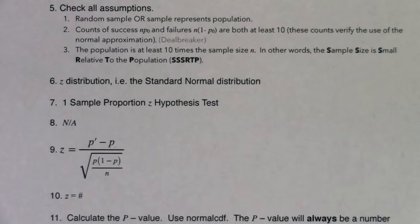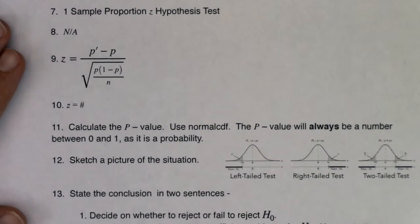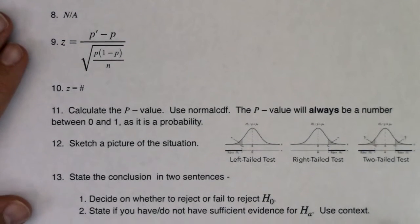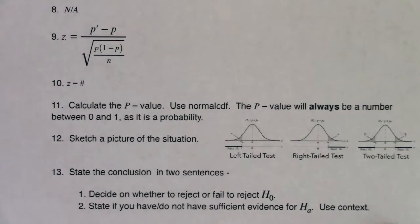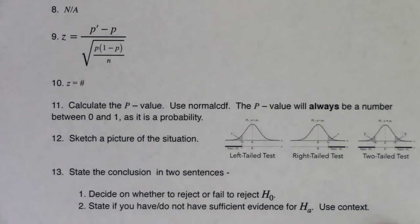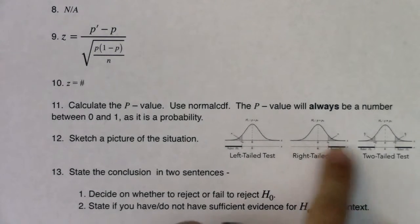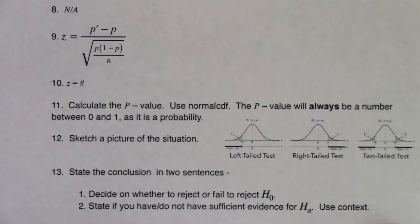In step 10, you'll be putting in your numbers for your particular problem. Steps 10, 11, and 12 you can get from your calculator — we have technology that can help with those. In step 11, get me that p-value, and you're going to use normal CDF to do it. It should always be a number between zero and one, as it's a probability. Sketch a picture of the situation — either left-tailed, right-tailed, or two-tailed. Then state your conclusion in two sentences: you're either going to reject or fail to reject the null, and then you either have sufficient evidence or you do not have sufficient evidence for the alternate. Make sure you use context.